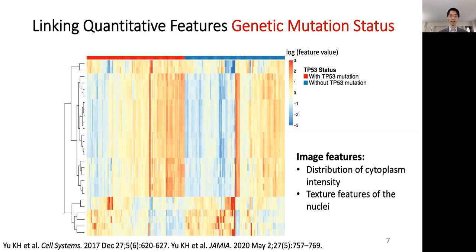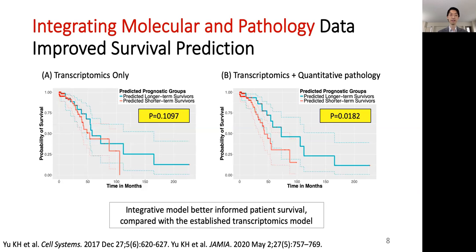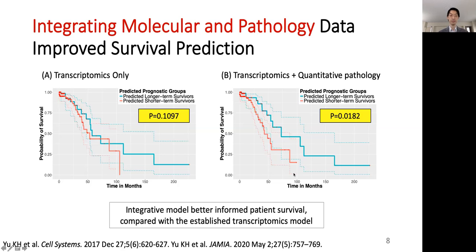Not only can we connect both pathology and molecular patterns, we can further integrate both molecular signatures and pathology profiles to attain better survival prediction. The figure on the left shows a gene expression-only model published in previous literature, but unfortunately we are not able to reproduce these results in our new cohort, showing there is some generalizability issue with that gene expression-only model. However, if we incorporate both gene expression patterns and quantitative pathology features, we are better able to provide survival prediction and distinguish longer-term survivors from shorter-term survivors. Our integrated approach may have greater generalizability compared with the established gene expression-only model.